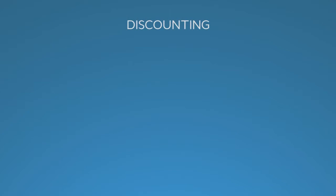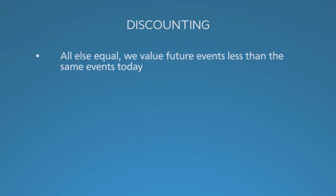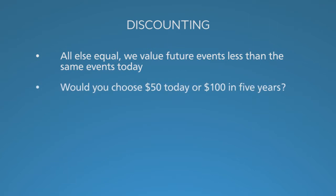Ask yourself: would you prefer to have $100 adjusted for inflation today or five years from now? Almost everyone says today. We adjust the value of future events in cost-effectiveness analysis because we value future events less than the same events occurring today. How strong is that preference? Would you choose $50 today or $100 in five years? If you find the amount of money today you'd consider equally desirable to $100 in five years, you can calculate your time preference — your discount rate.